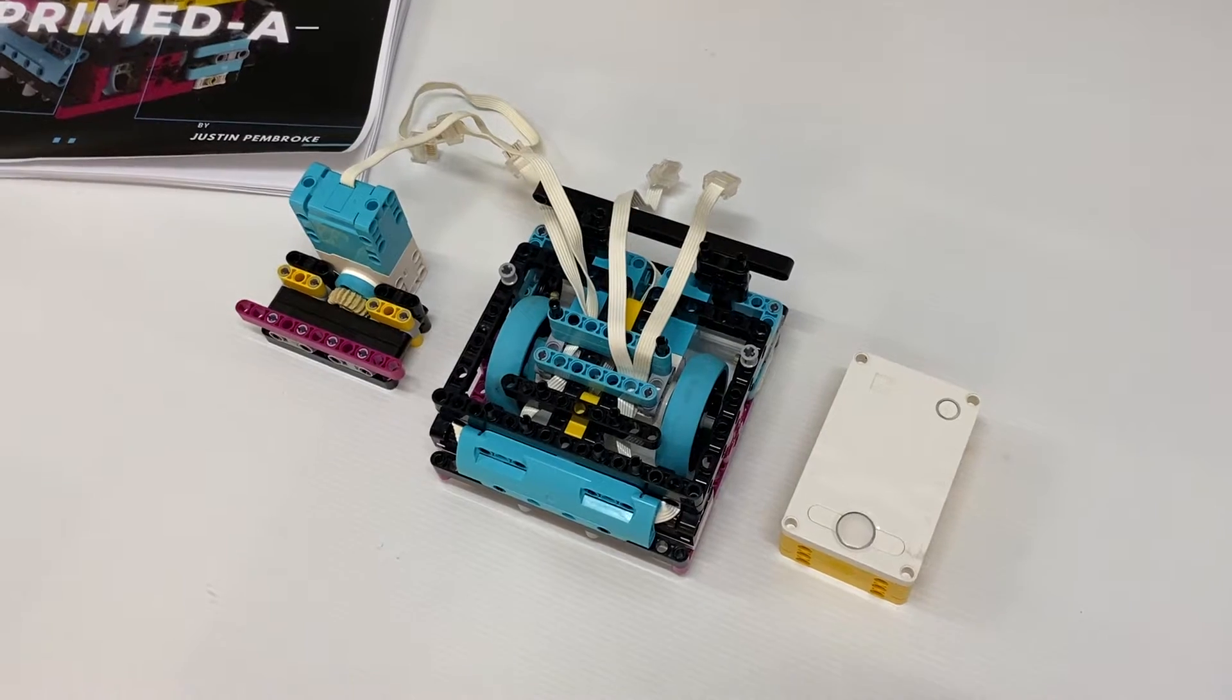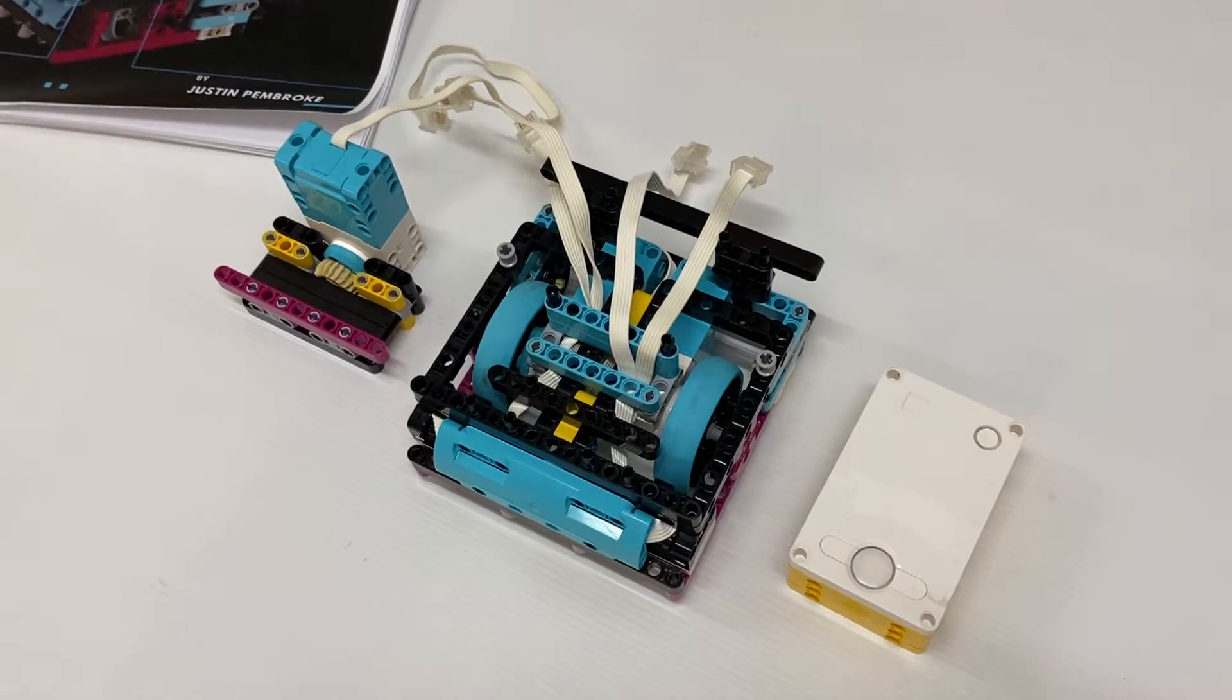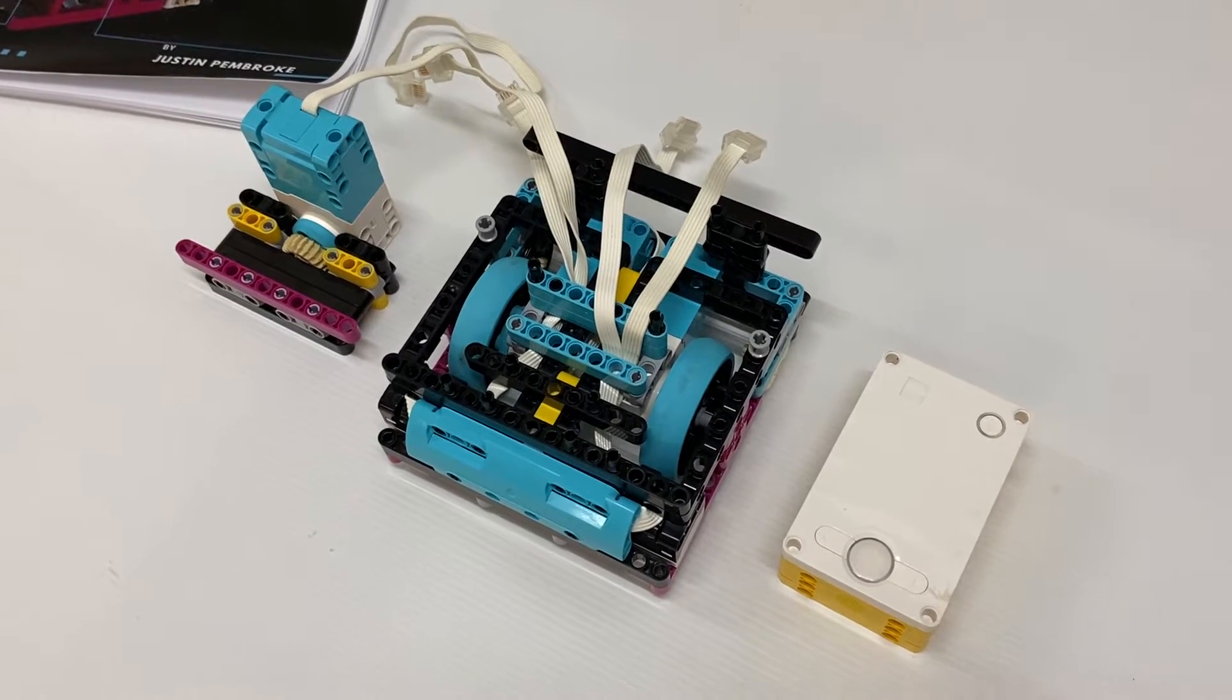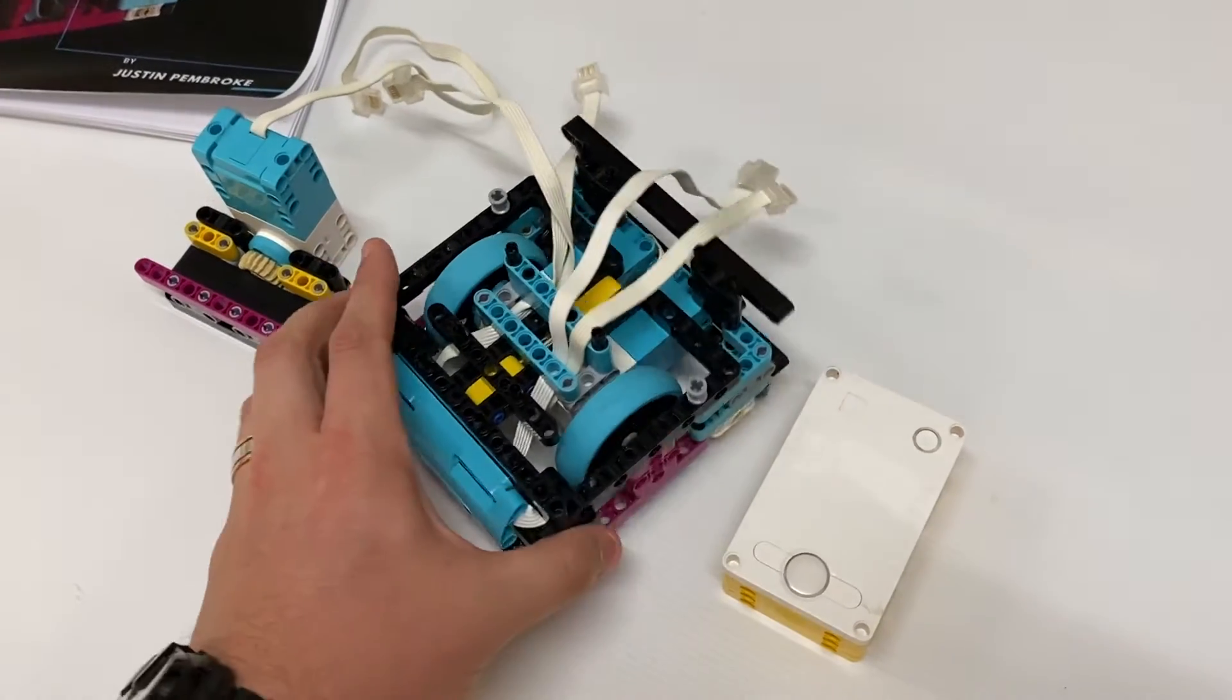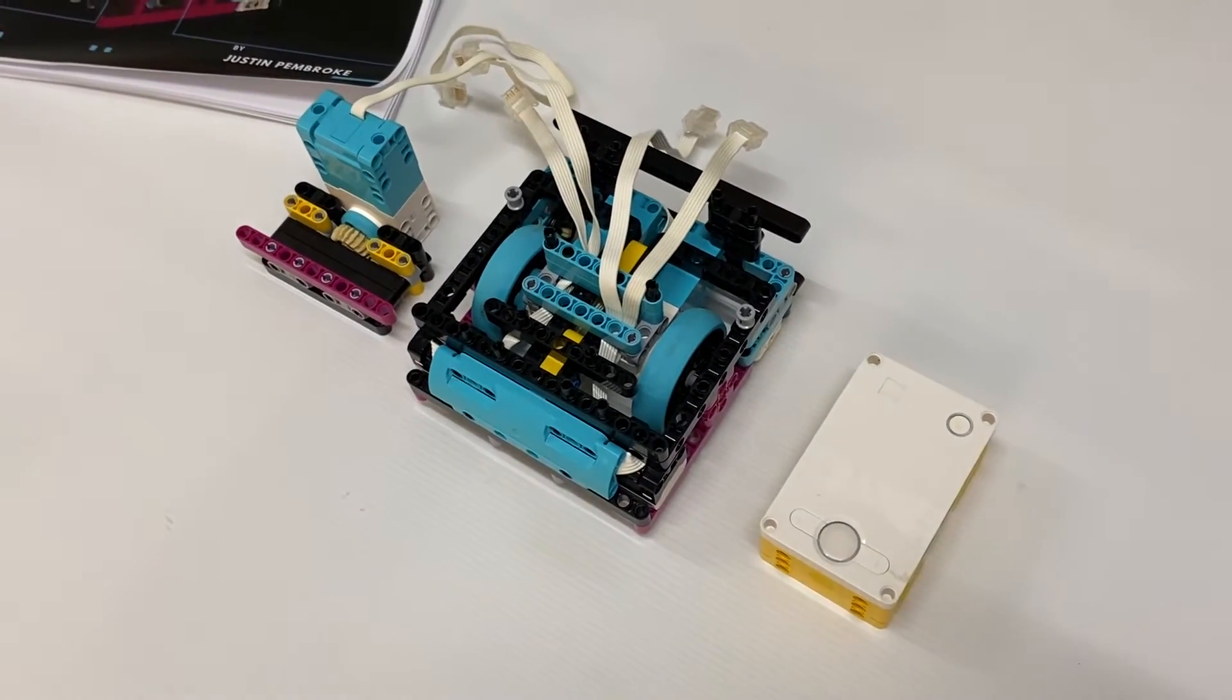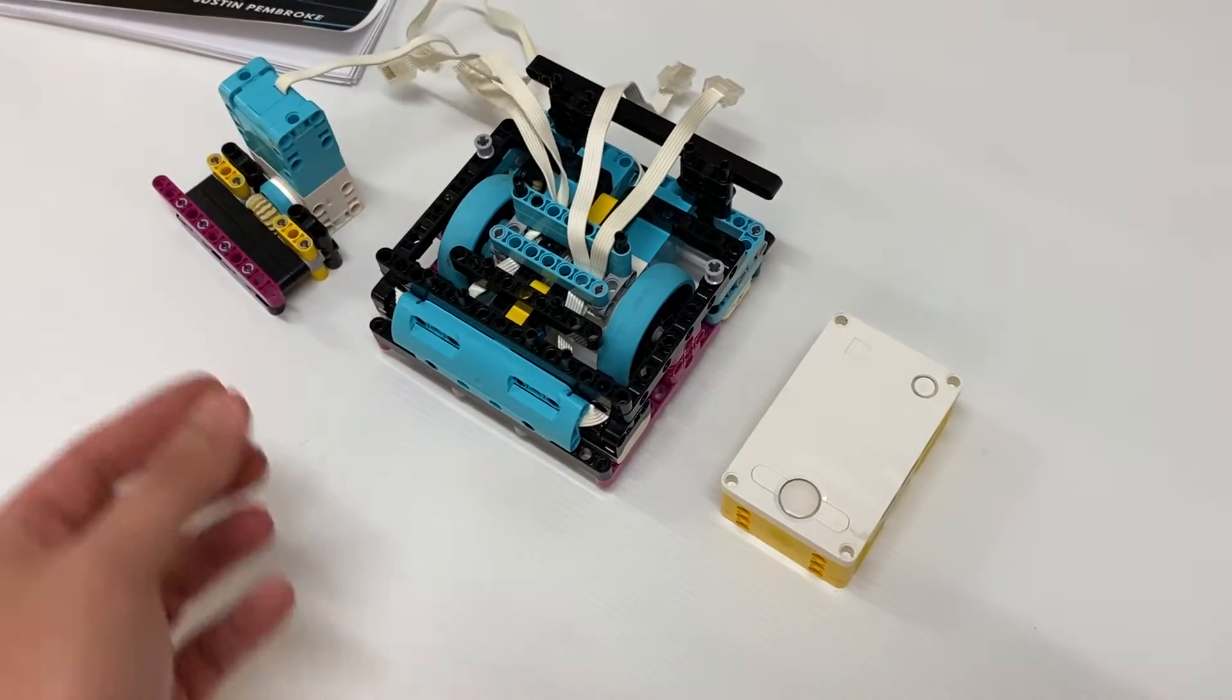All right guys, this time around we're going to look at a really simple spike robot. A lot of people have made comments that when they're purchasing kits for schools, a lot of the example robots that they are getting ideas from are ones that are using expansion sets as well. So this kit here is just using the spike kit by itself, the core kit.